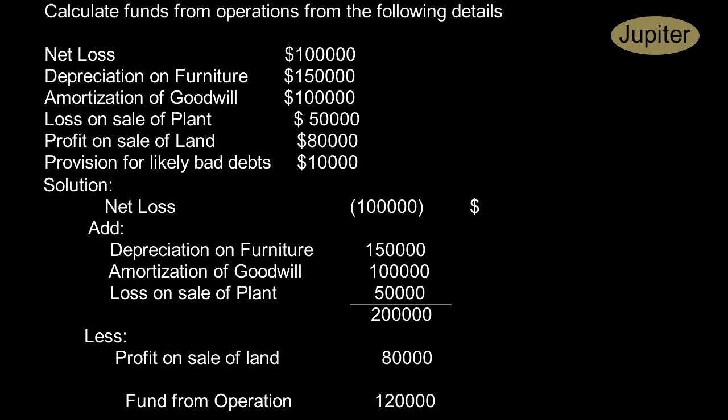So net loss $100,000 - it is negative, right? Add depreciation on furniture. We need to add depreciation on furniture because depreciation is the book cost, so it doesn't alter our working capital because we don't pay for depreciation. It doesn't result in outflow of cash, it is just a book cost. Depreciation on furniture $150,000, we have added it.